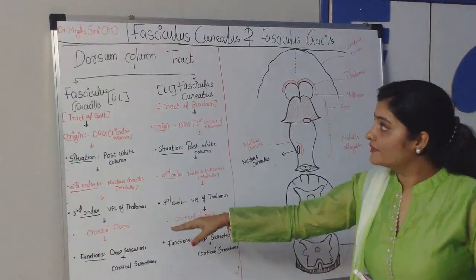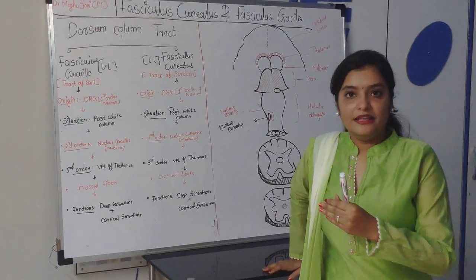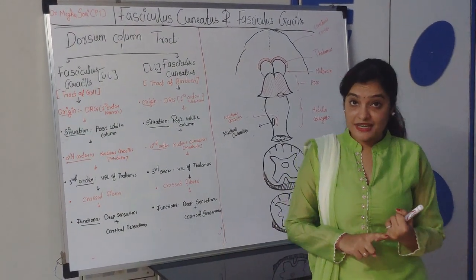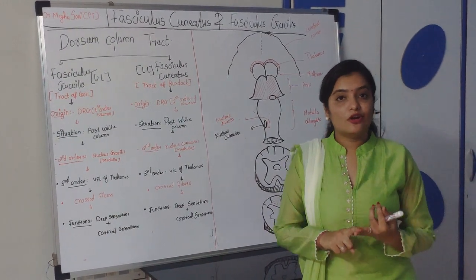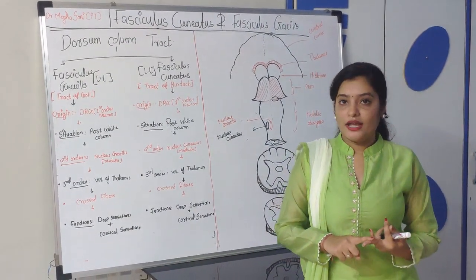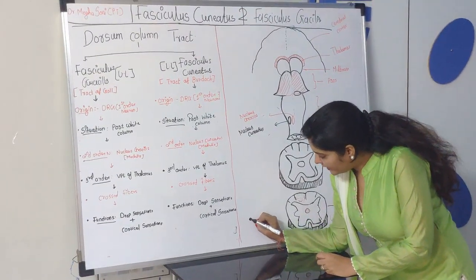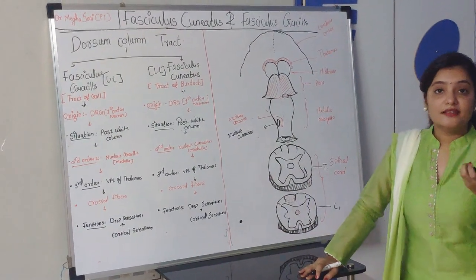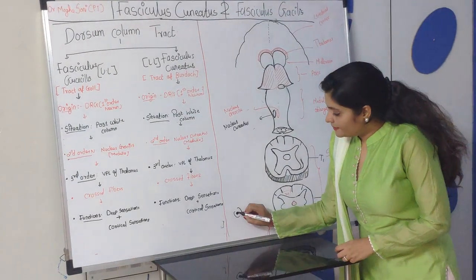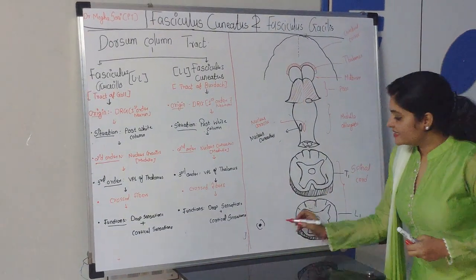Fasciculus gracilis mainly carries deep and cortical sensations. Deep sensations include proprioception, position of the joint, kinesthesia, movement of the joint, and vibration. Cortical sensations include fine touch, tactile localization, two-point discrimination, and stereognosis. Whenever you do any movement or hold any object, receptors situated within the joints are stimulated, and this energy is converted into action potentials, which are carried to the posterior part of the spinal cord at the level of the dorsal root ganglion.